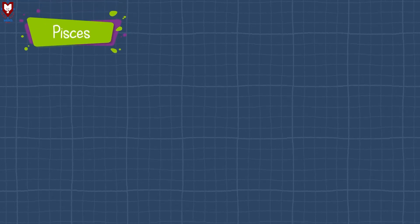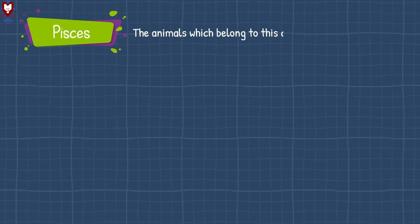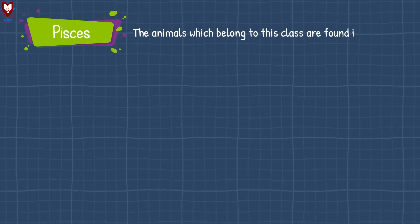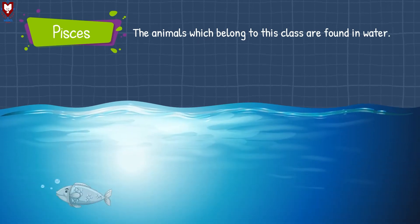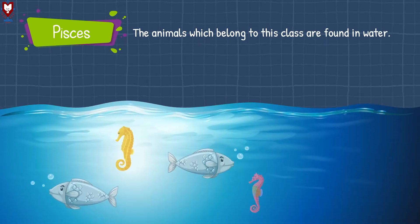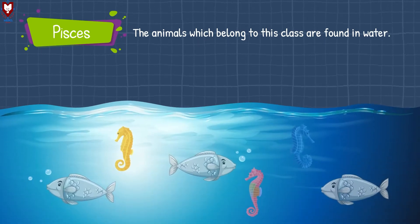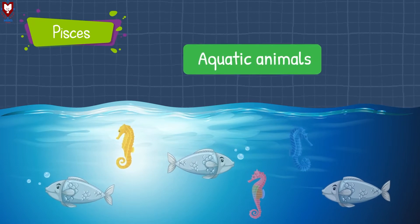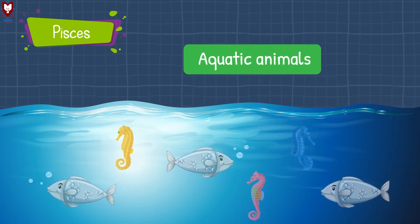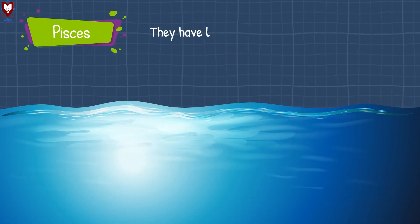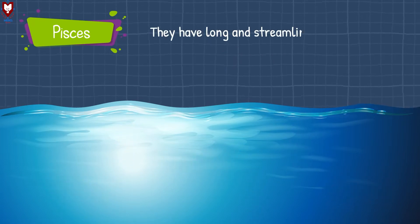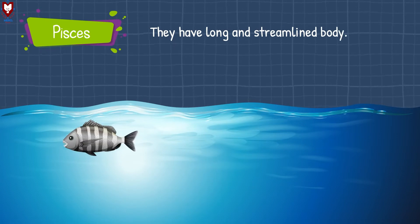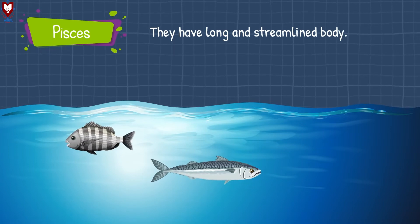The first class is called Pisces. The animals which belong to this class are found in water — they are aquatic animals. They have a long and streamlined body shape.